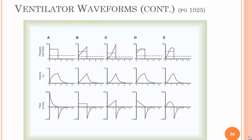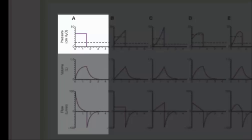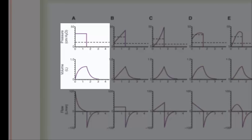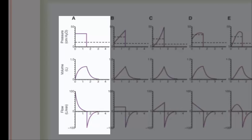Looking at breath A — this is a constant pressure generator. You can see how the pressure waveform is square or flat compared to the others. That pressure generates the volume, or the volume generates that pressure, depending on whether you have volume ventilation or pressure ventilation. Flow is the only one that has a positive and negative deflection, because the negative deflection represents exhalation.